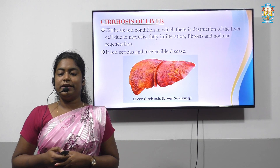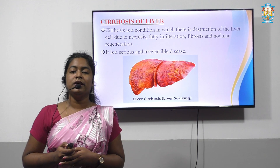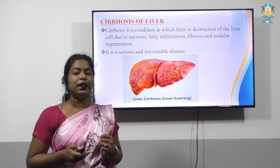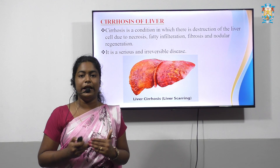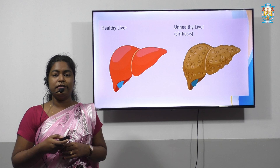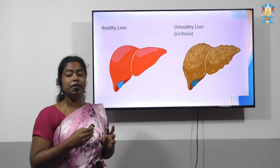Let's see about the first condition — cirrhosis of the liver. What is meant by liver cirrhosis? It is a condition where there is destruction of liver cells due to necrosis, fatty infiltration, fibrosis, and nodular regeneration. This liver cirrhosis condition is also known as liver scarring, and this condition is very serious and is not reversible in any form. This picture clearly depicts the difference between a healthy liver and liver cirrhosis, where the scarring is clearly visible.